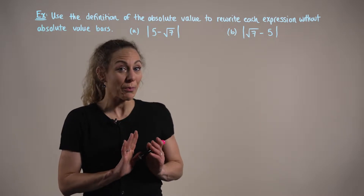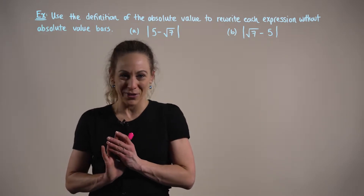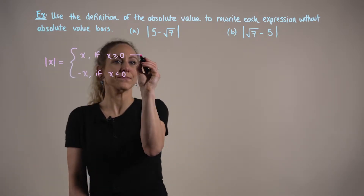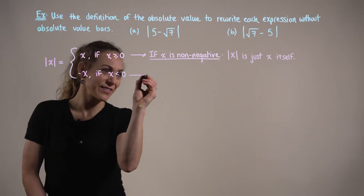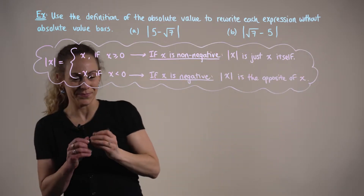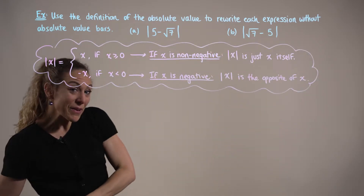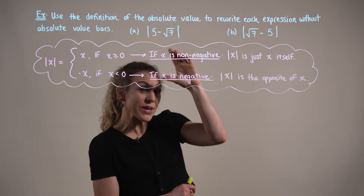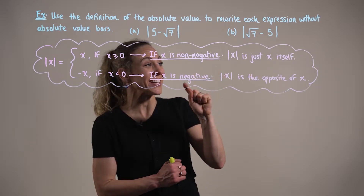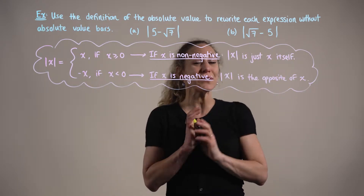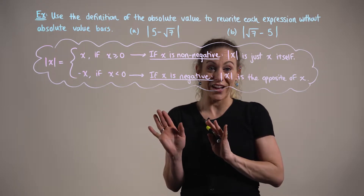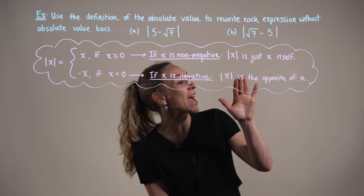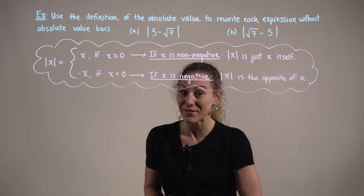To get us started for both parts, let's begin by recalling the definition for the absolute value. Keeping the two cases in mind: if x is non-negative, then the absolute value of x is just x itself, versus when x is negative or less than zero, the absolute value of x is going to be the opposite value of x.